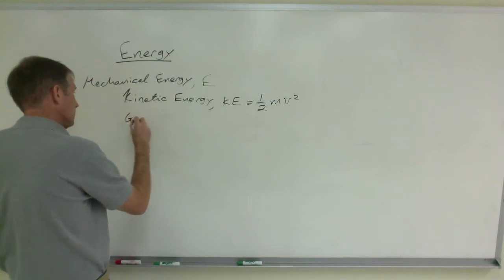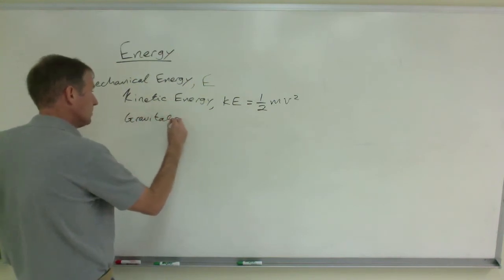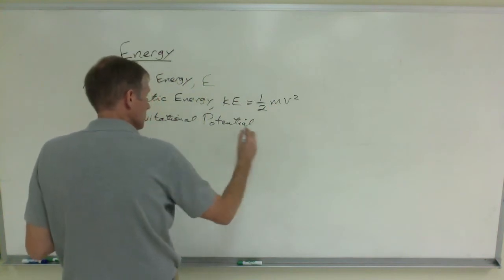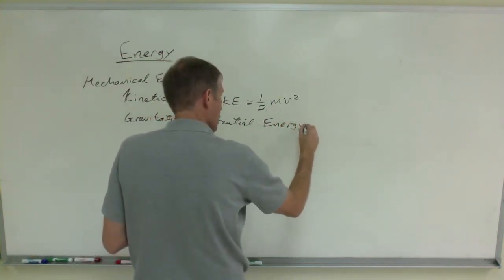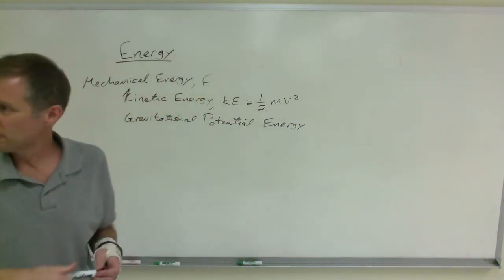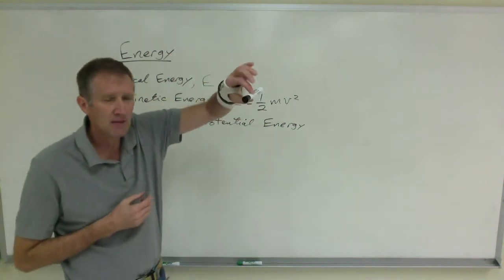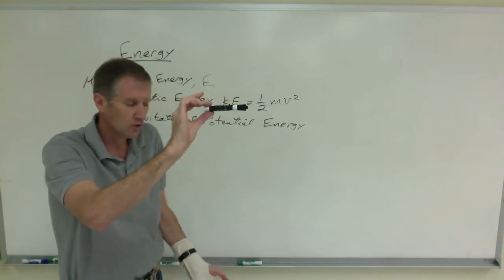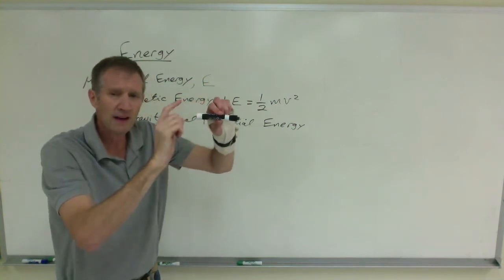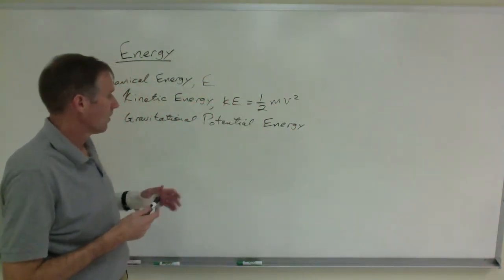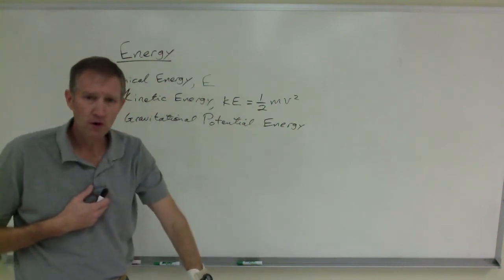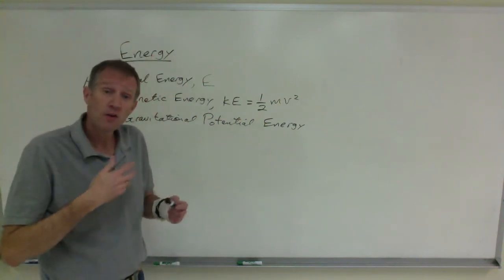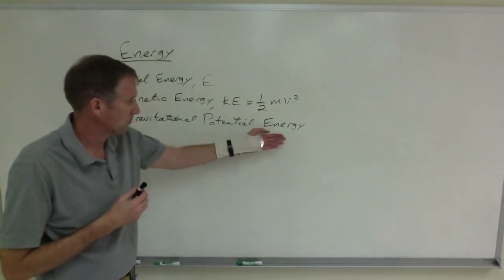By the same token, gravitational potential energy is also a relative concept because it depends where you measure the height from. This whiteboard marker has the potential to fall, and in the process it's going to gain kinetic energy, and it could do some useful work. But where do you measure that height from? The height could be measured from the floor. The height could be measured from the ground floor. The height could be measured from the ceiling. There are different places you can measure it from, and so you would get different values for potential energy.